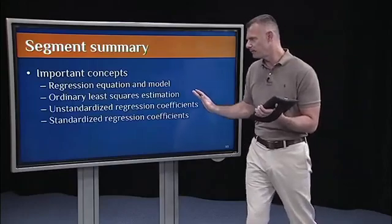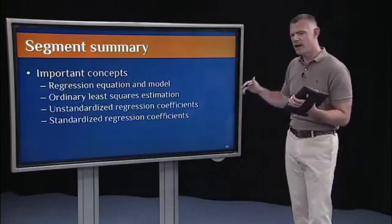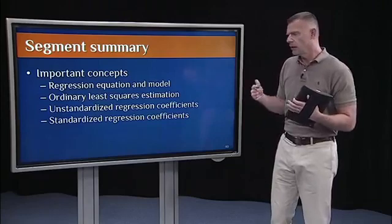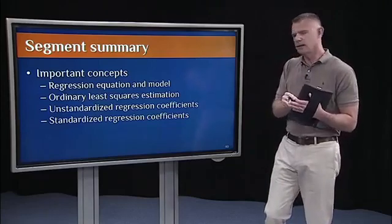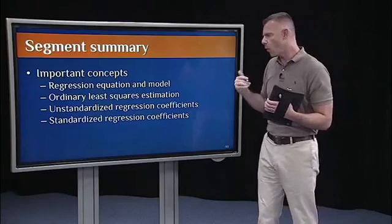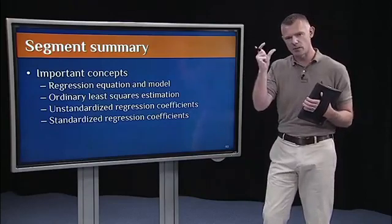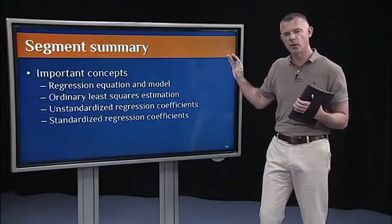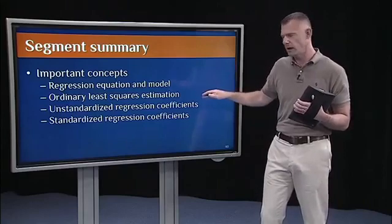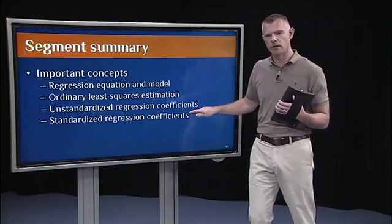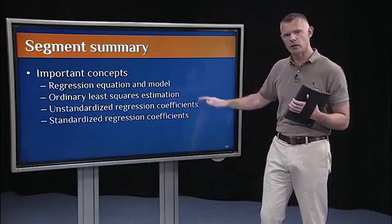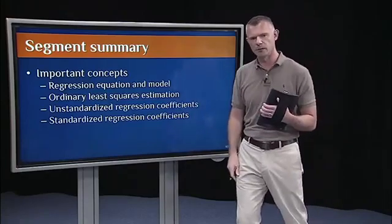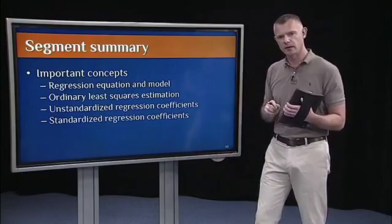So, to wrap up this segment, the important concepts to take away, again, are to understand the regression equation and the model. Perhaps the most important concept in this segment is the idea of ordinary least squares estimation, the idea that we're going to minimize the residuals in our regression model. And then understand that we can calculate both unstandardized regression coefficients and standardized regression coefficients. And I'll show you how to do each of those in lab this week using the LM function and one extra function to do the standardized piece. And that's it for calculating the coefficients.